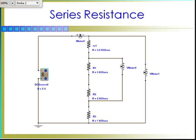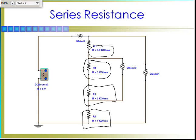I've got a circuit with the same 3.9 kΩ resistor we used last time, plus three more resistors: one at 3 kΩ, one at 2 kΩ, and one at 1 kΩ. Give or take their individual tolerances, the total comes out to about 10 kΩ. I have a voltage source in the range of 5 volts. First, we'll check the resistance across all these resistors at once.